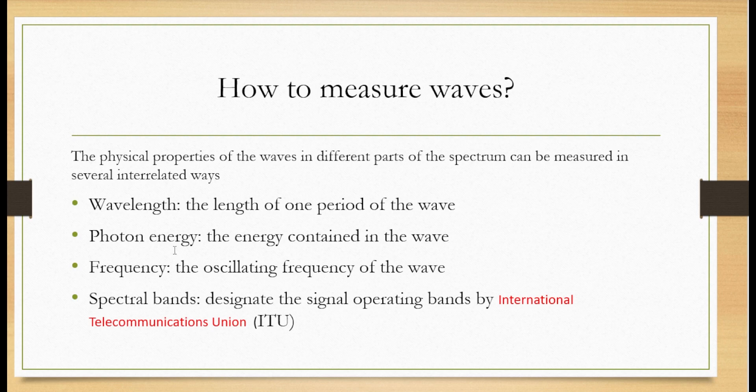The first one is wavelength. Wavelength is the length of one period of the wave. Second, we can measure energy or in a fiber optics communication system, we are interested to measure photon energy, the energy contained in a wave. Third parameter is frequency. Frequency is oscillating frequency of the waves. For fiber optics, it is in terahertz. And the last one, which we are going to use for our applications, this is spectral bands. It is designated by International Telecommunication Union, ITU.